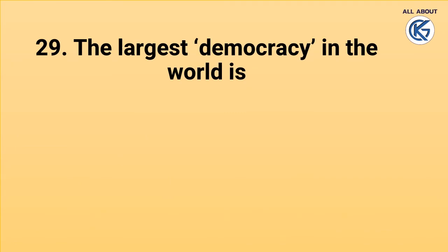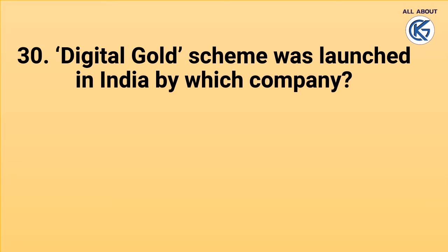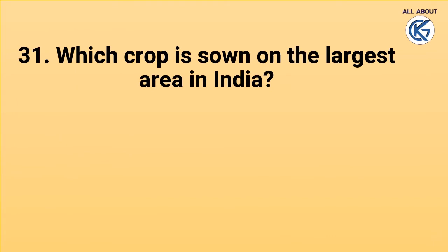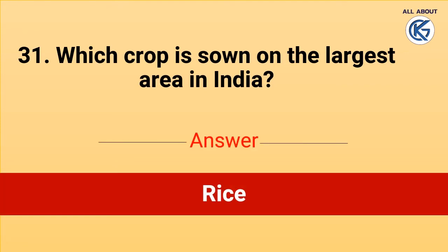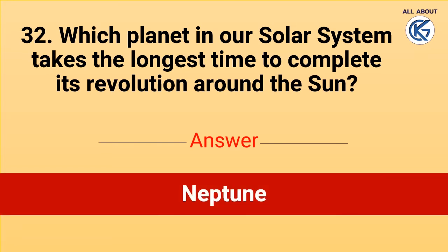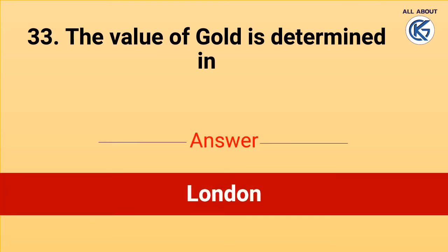The largest democracy in the world is India. Digital gold scheme was launched in India by Paytm company. Which crop is sown on the largest area in India? Rice. Which planet in our solar system takes the longest time to complete its revolution around the sun? Neptune.